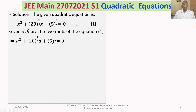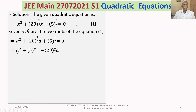That gives us alpha squared plus 20 to the power of 1 by 4 times alpha plus 5 to the power of 1 by 2 equals 0. Now, send the 20 to the power of 1 by 4 times alpha to the right-hand side. Then it becomes alpha squared plus 5 to the power of 1 by 2 — that is root 5 — equals minus 20 to the power of 1 by 4 times alpha.